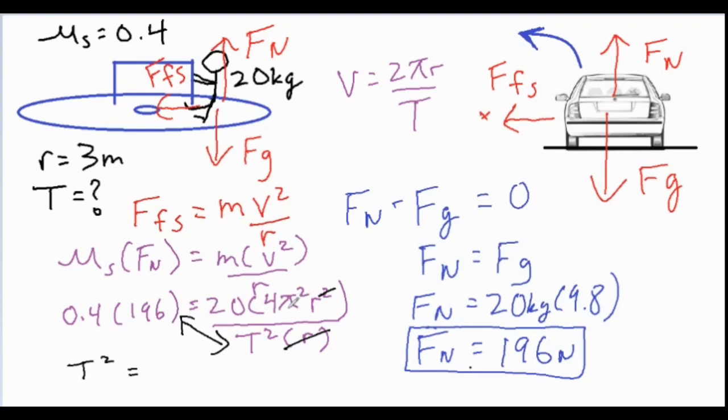20 times 4 times π squared divided by 0.4 times 196, and that equals 30.21. Finish off by square rooting both sides and then your answer comes out to 5.5 seconds as our final answer.